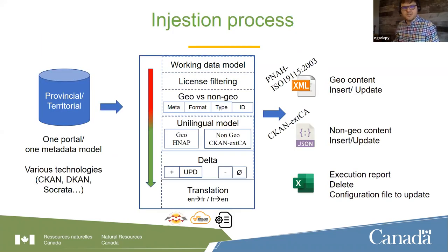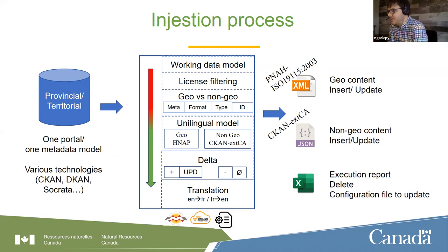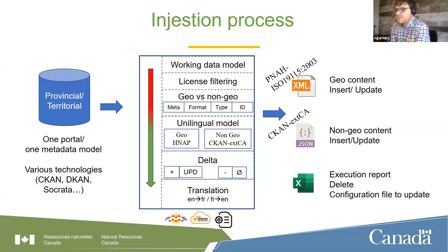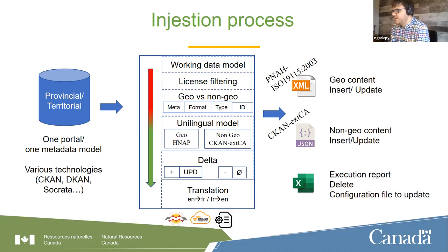Looking at the ingestion process — the only technical slide of this presentation — from left to right, we have the PT APIs, one metadata model per province, with several technologies: CKAN API, DCAT API, and Socrata API. Once the data is read, we have our transformation process, developed using the software FME from Safe Software, a Canadian company and a powerful ETL. All of this is hosted on our AWS cloud instance.